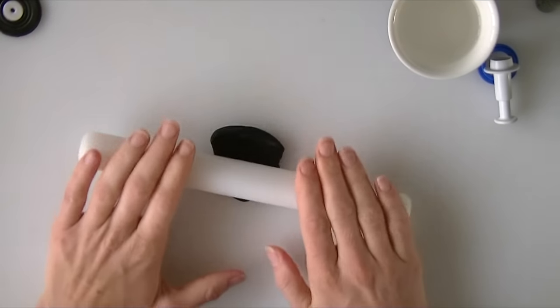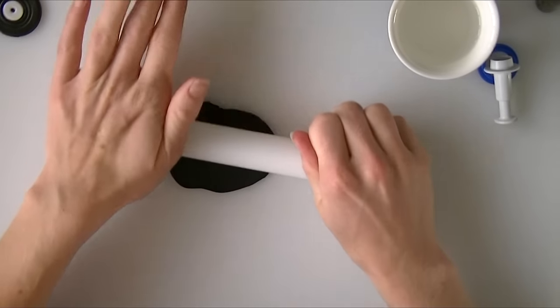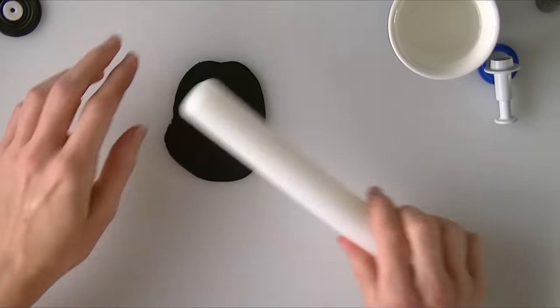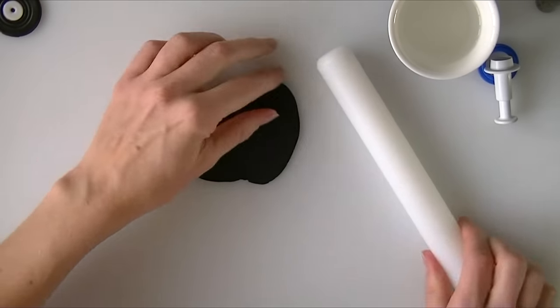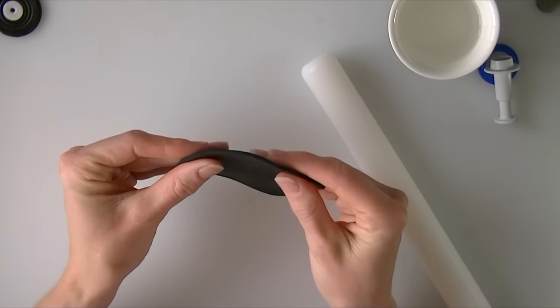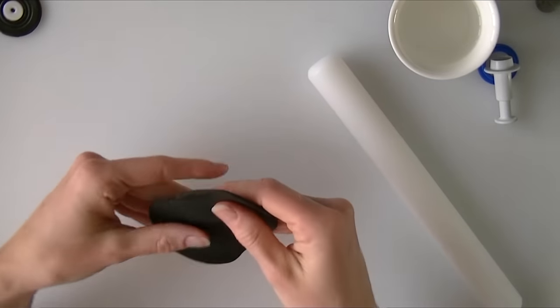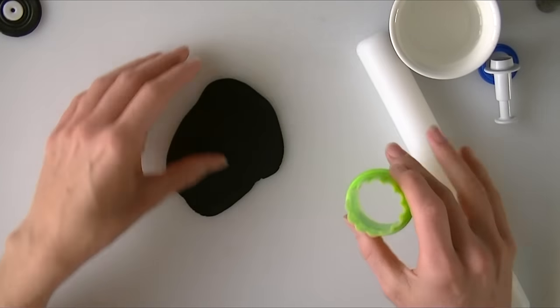So we are just going to roll out our modelling paste nice and thin, not as thin as you would if you were making flowers otherwise you will find it won't hold its shape. So it is probably a couple of millimetres thick that I am rolling it to. You can try it with normal fondant but you might find it doesn't keep its shape as well.